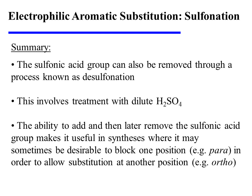The sulfonic acid group can also be removed through a process known as desulfonation, involving treatment with dilute aqueous sulfuric acid. The ability to add and then later remove the sulfonic acid group makes it useful in syntheses, where it may sometimes be desirable to block one position, such as para, in order to allow substitution at another position, such as ortho.